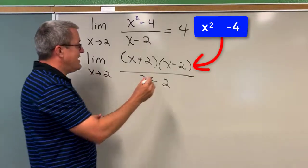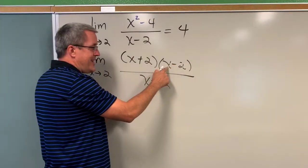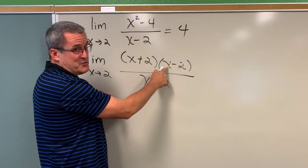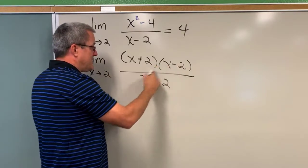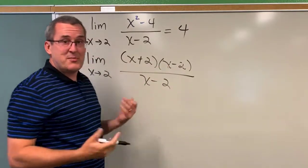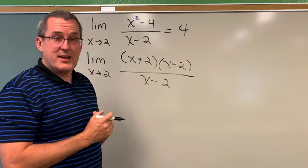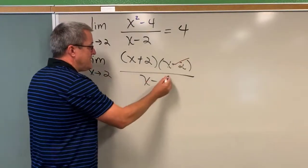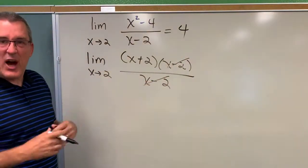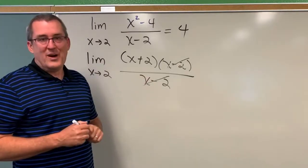And the reason that's helpful is now x minus 2 for any input value, not x equals 2, but nearby 2, x minus 2 divided by x minus 2 is going to produce 1. Any quantity divided by itself is 1. So these two just, we say cancel out, but what we really mean by that is they're just 1.